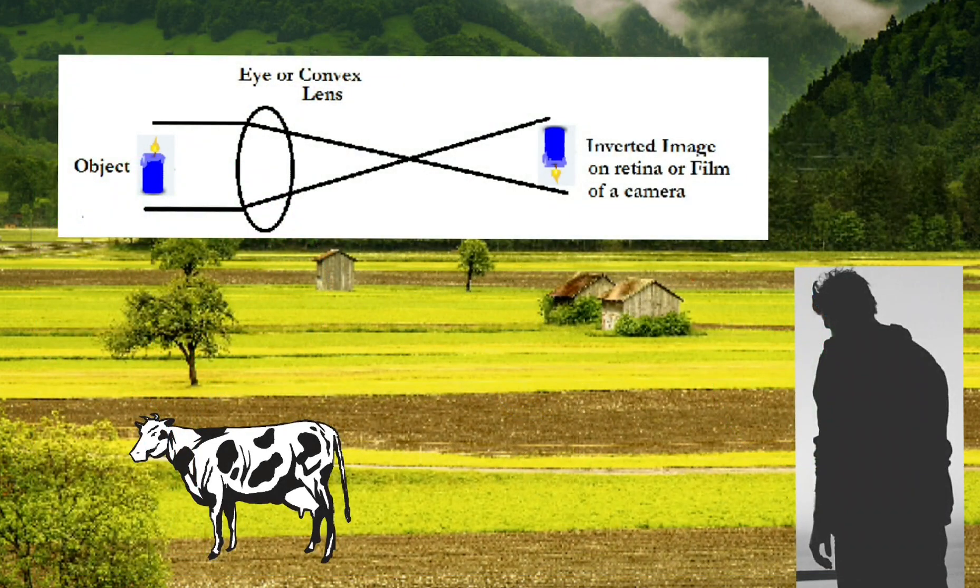Cameras also work on a similar principle. So the images captured by your cameras are inverted images. Why does the image get inverted in Descartes' experiment, or why do the images captured by your eyes get inverted?